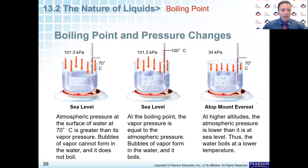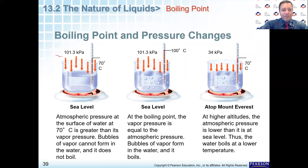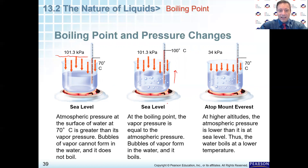Here is a nice chart to show us what we're talking about. We have water, and at sea level we have 101.3 kilopascals. At 70 degrees Celsius, nothing really is happening. But when you get to 100 degrees Celsius — we know that to be the boiling point of water — you can see it is starting to escape at sea level. The boiling point and the vapor pressure are equal and the water will boil.